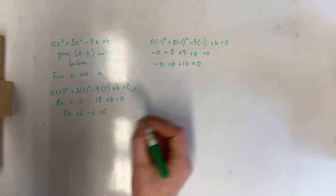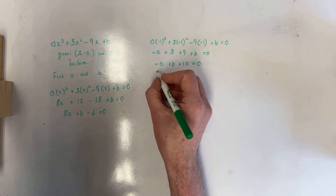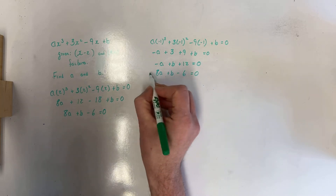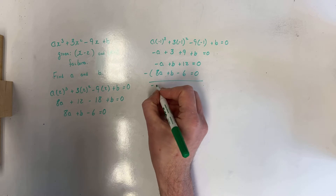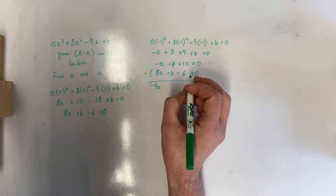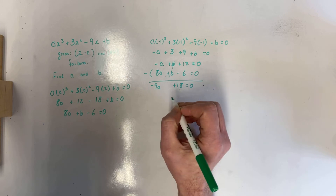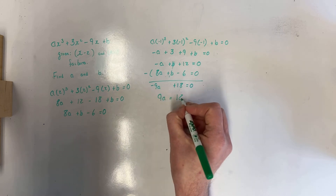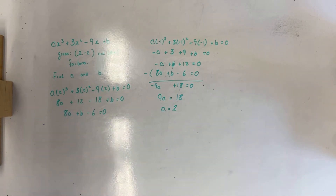Now I take my two equations and subtract one from the other. Subtracting the second equation from the first: (8a + b - 6) minus (-a + b + 12) = 0. That gives 8a minus (-a) = 9a, b minus b cancels, and -6 minus 12 = -18, so 9a - 18 = 0. Adding 18 to both sides: 9a = 18, therefore a = 2.